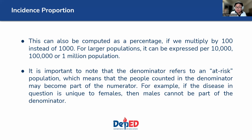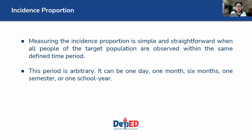It is important to note that the denominator refers to an at-risk population. The people counted in the denominator can potentially be part of the numerator. For example, if the disease in question is unique to females, then males in that population cannot be counted in the denominator — that is what we mean by at-risk. Measuring the incidence proportion is simple and straightforward when all people of the target population are observed within the same defined time period. The time period can be arbitrary — it can be one day, one month, six months, one semester, or one school year.